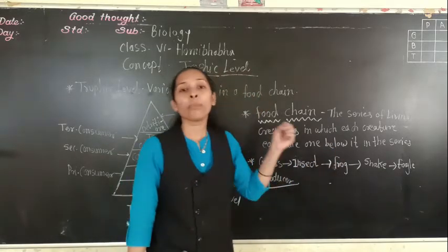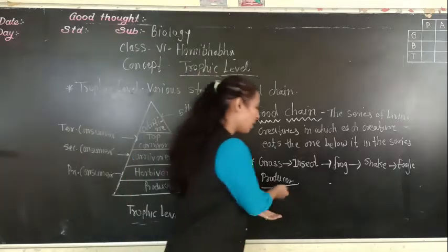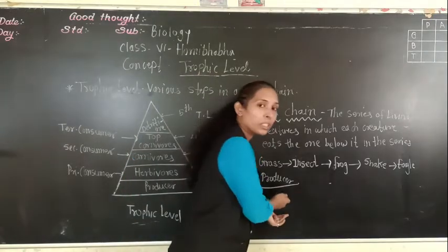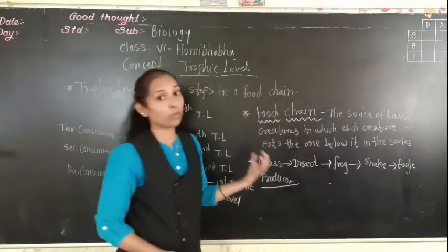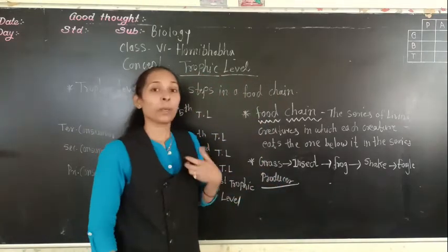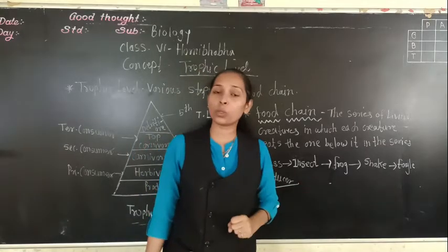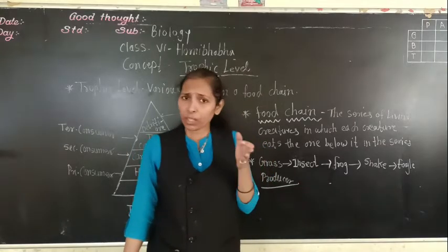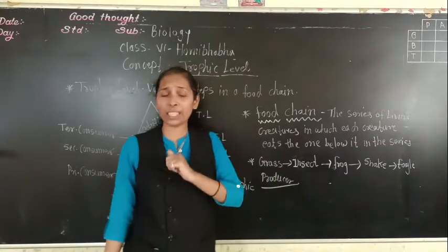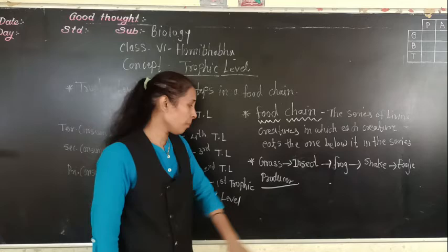So here whatever the other organisms are, all of these remaining ones are the consumers. Consumers means those who feed on the producers - they are called consumers. But again, in that consumers there are also categories. We will see that also.